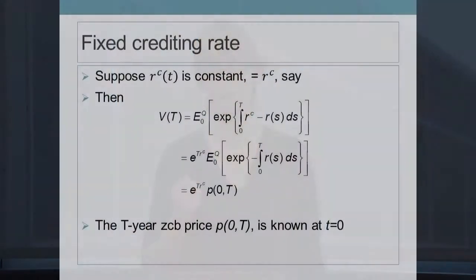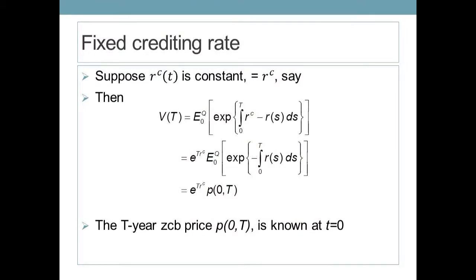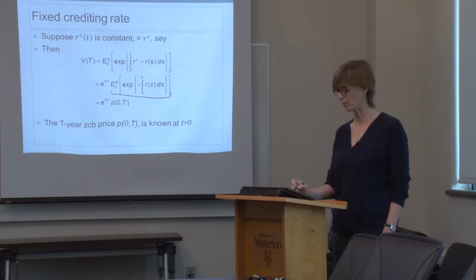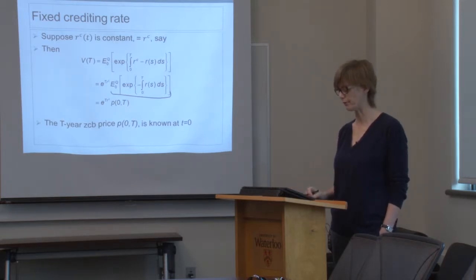There are a couple of simple cases where no additional assumptions are needed. The first is when the crediting rate is a constant — a relatively common plan design for cash balance plans. In that case, in the valuation formula we can extract the R^C term from the expectation because it's not random, leaving a constant R^C factor and a discount factor in the short rate. That discount factor is simply the zero-coupon bond price for a T-year zero-coupon bond, which is observable at time zero — no randomness, no model required.